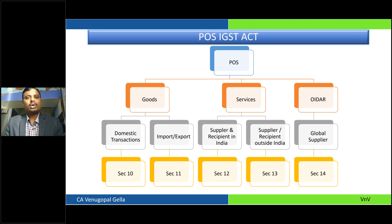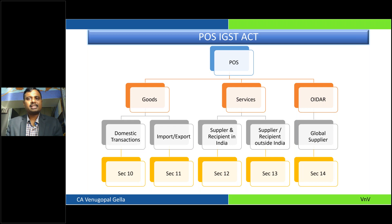What are we going to look at? For place of supply for goods in case of domestic transactions, it is discussed in Section 10. Import and export is dealt with in Section 11. When it comes to services, if the supplier and recipient are both in India, it is in Section 12. And when either one party is outside India, it is dealt with in Section 13.